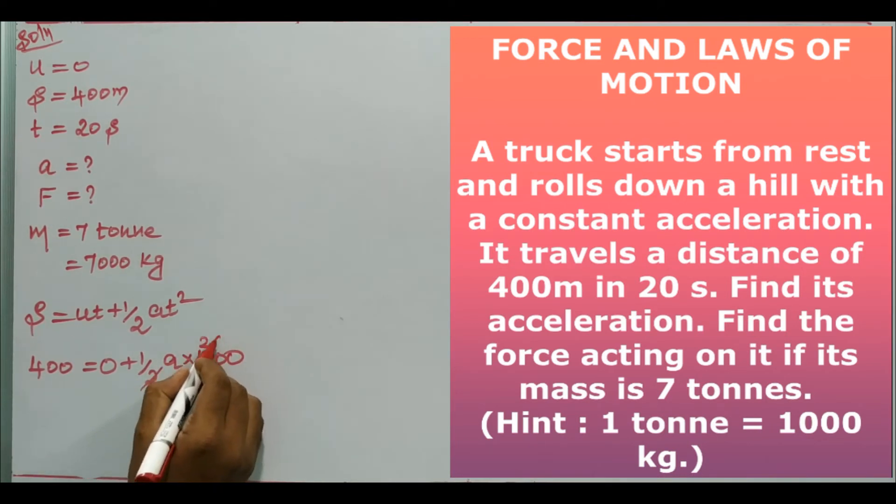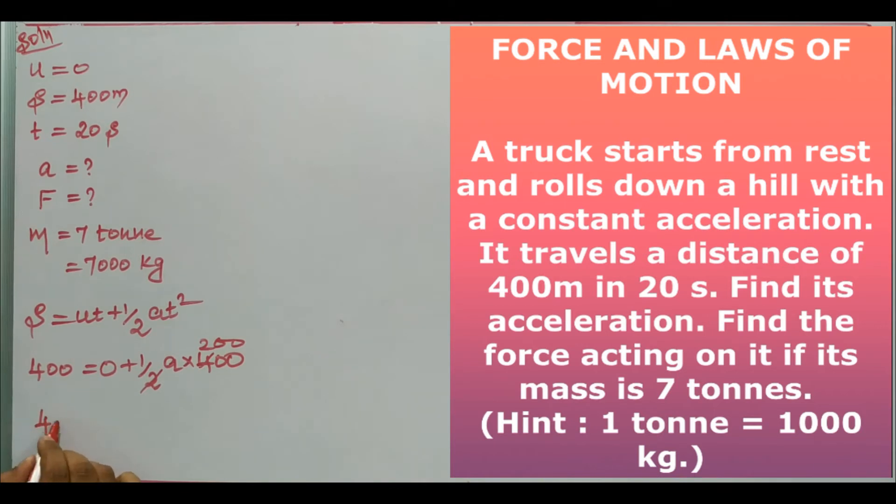So 400 equals half times a times 400, which is 200a. Therefore 400 equals 200a. Dividing both sides, a equals 2 meters per second squared.